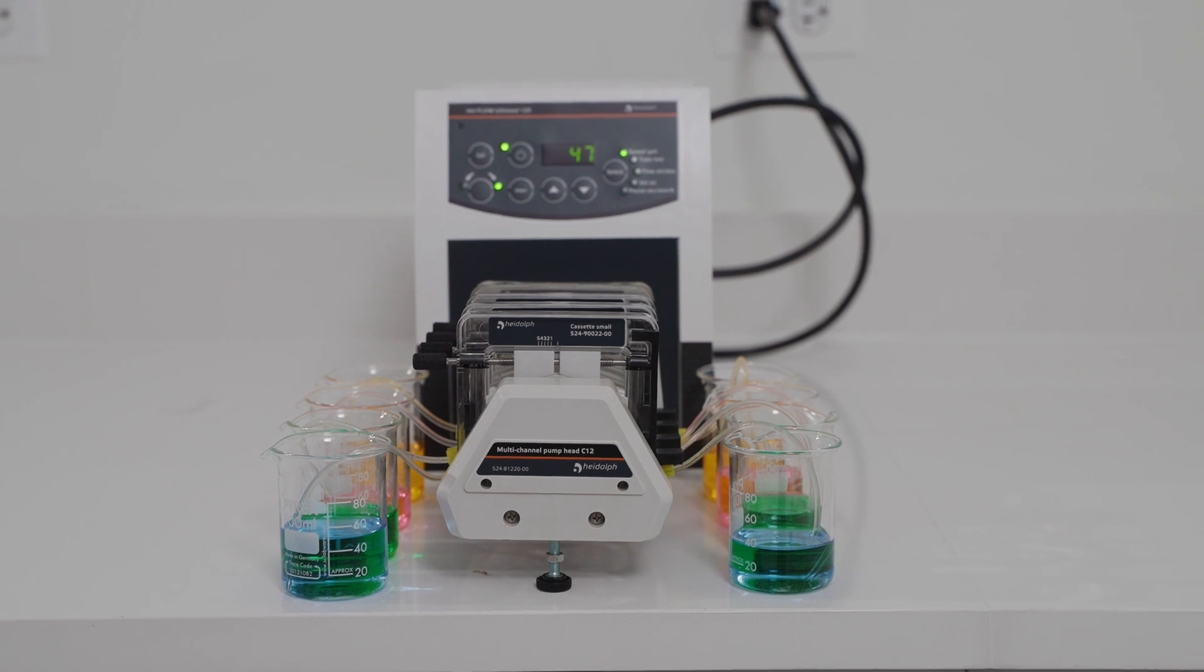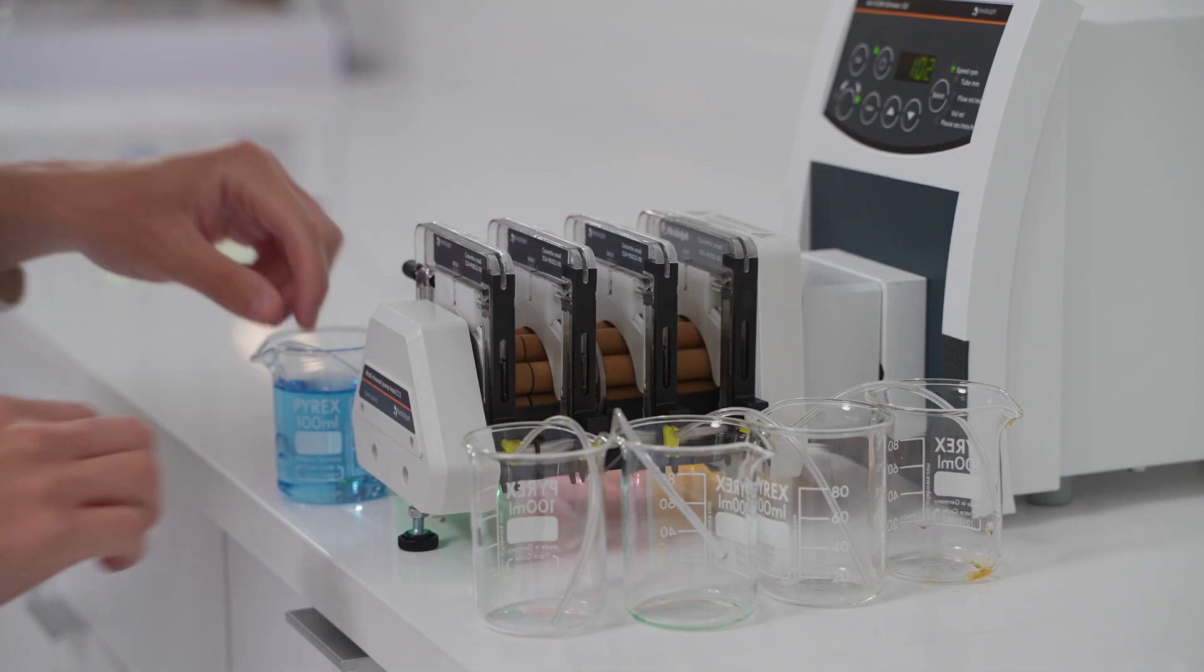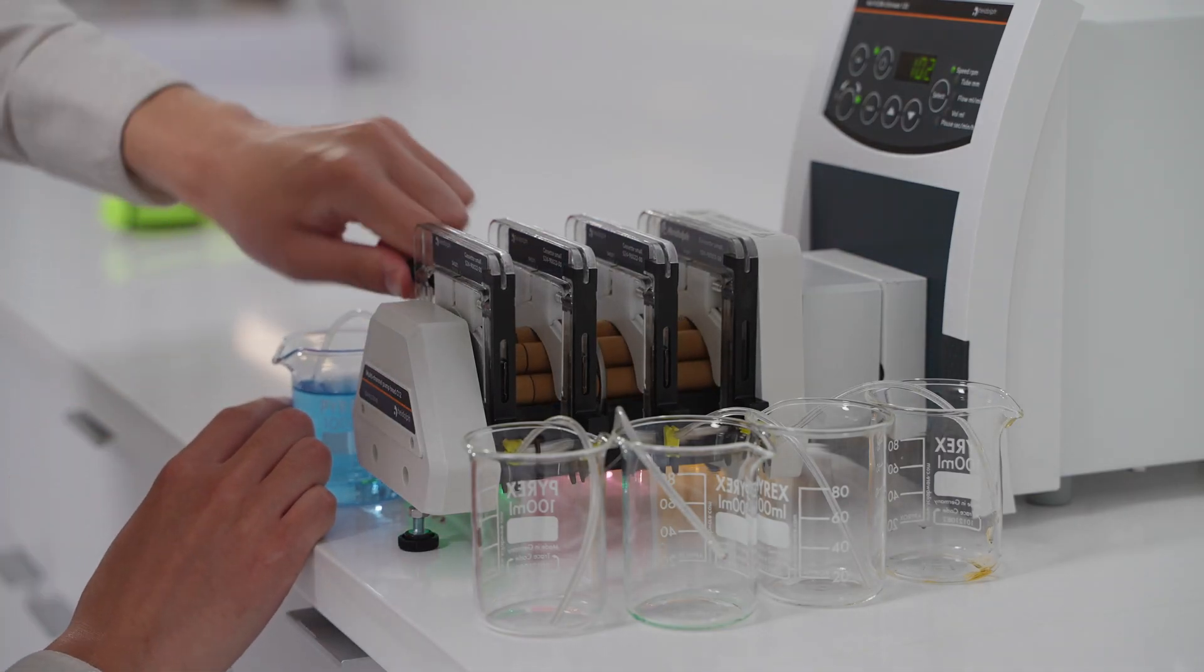Additionally, the C12 has two features that help it distribute the fluid evenly. The first feature is the built-in gear reduction system that allows the pump head to distribute the smallest amount of liquids accurately. The second feature is the eight roller system design that allows for low pulsation across all 12 samples.